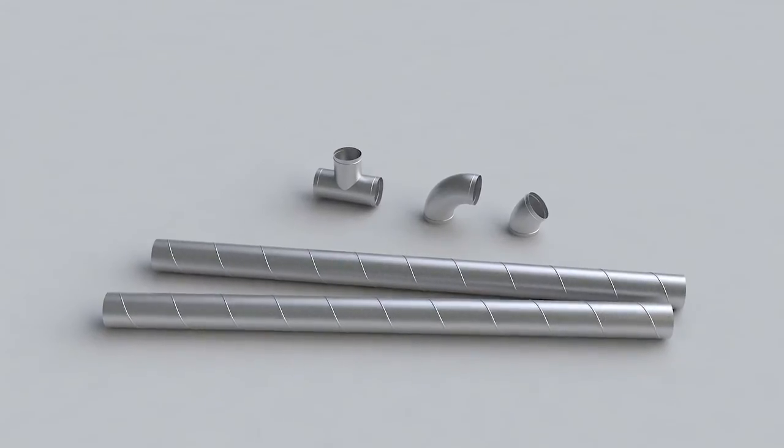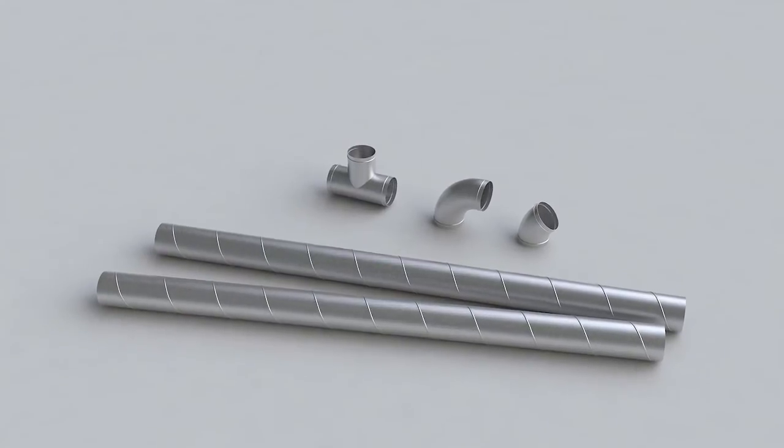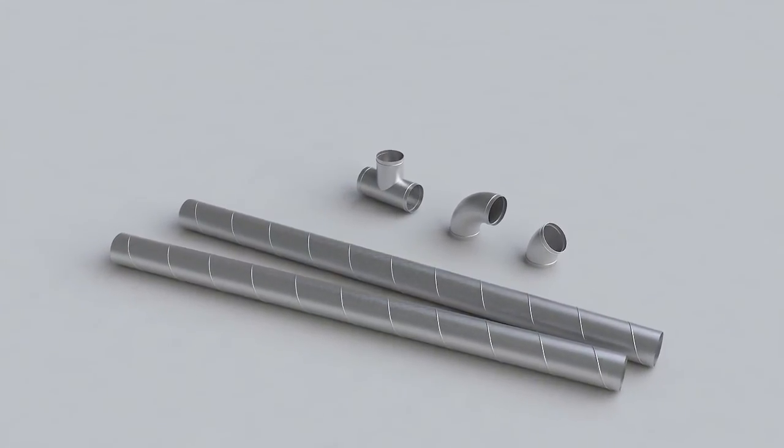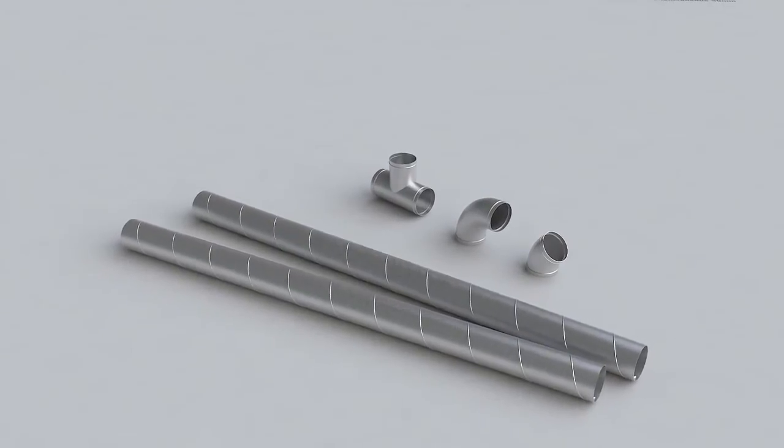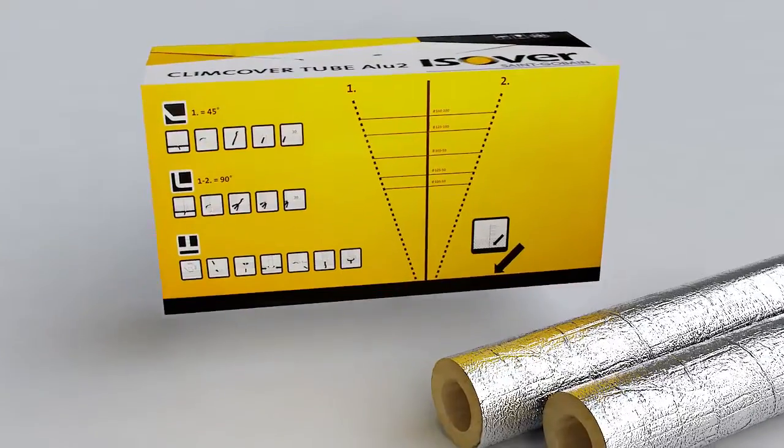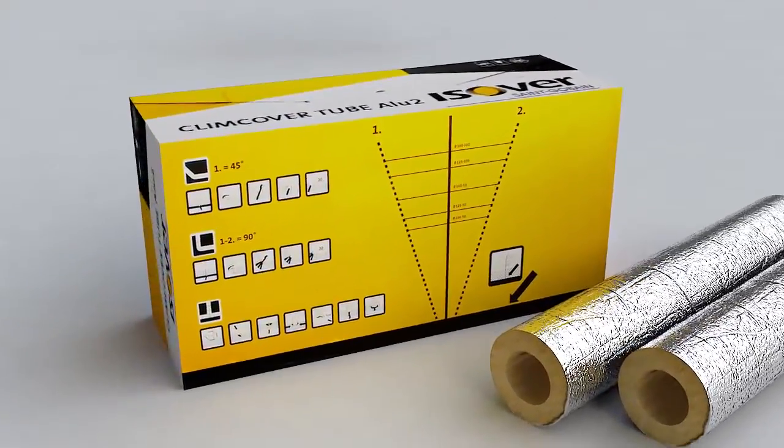With the same product, it's also easy to insulate 45 and 90 degree angles and T branches. No separate angle sections are required. Angles are cut with the assistance of lines provided on the packaging. Insulation work is performed easily and quickly on a worktop.